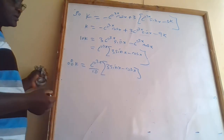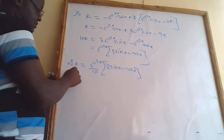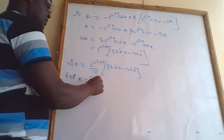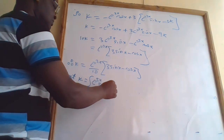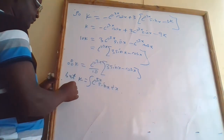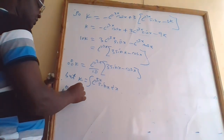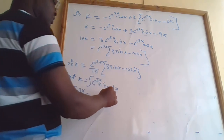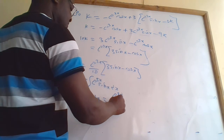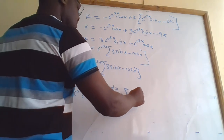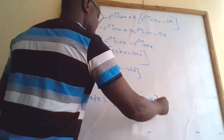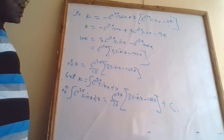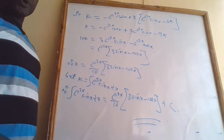But k was equal to the integral of e^(3x)·sin(x) dx. Therefore, the integral of e^(3x)·sin(x) dx = e^(3x)/10 · (3·sin(x) − cos(x)) + C. Thank you for watching and listening.